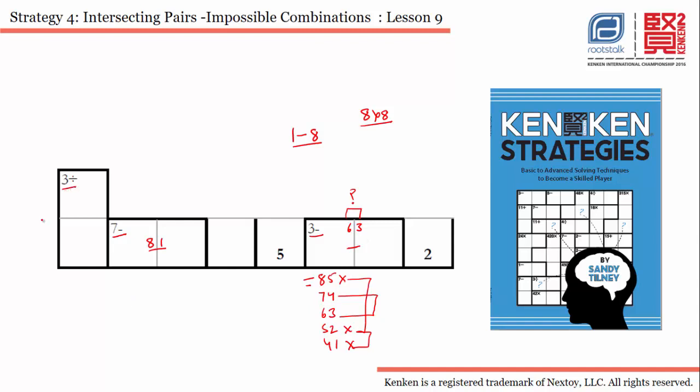Let's start with this. This says 3-division. The possible combinations are 1, 3 and 2, 6. These are the two possible combinations.